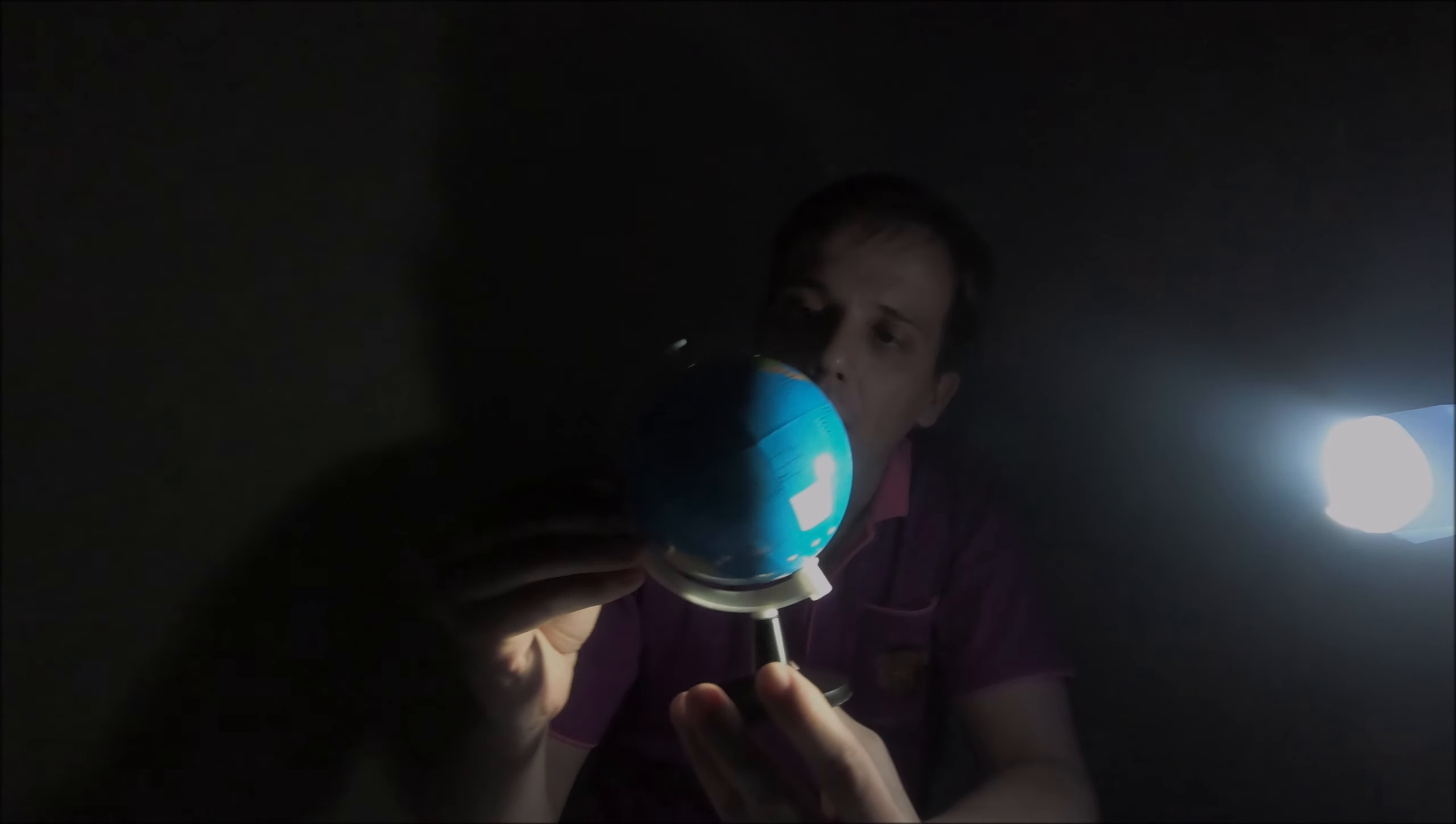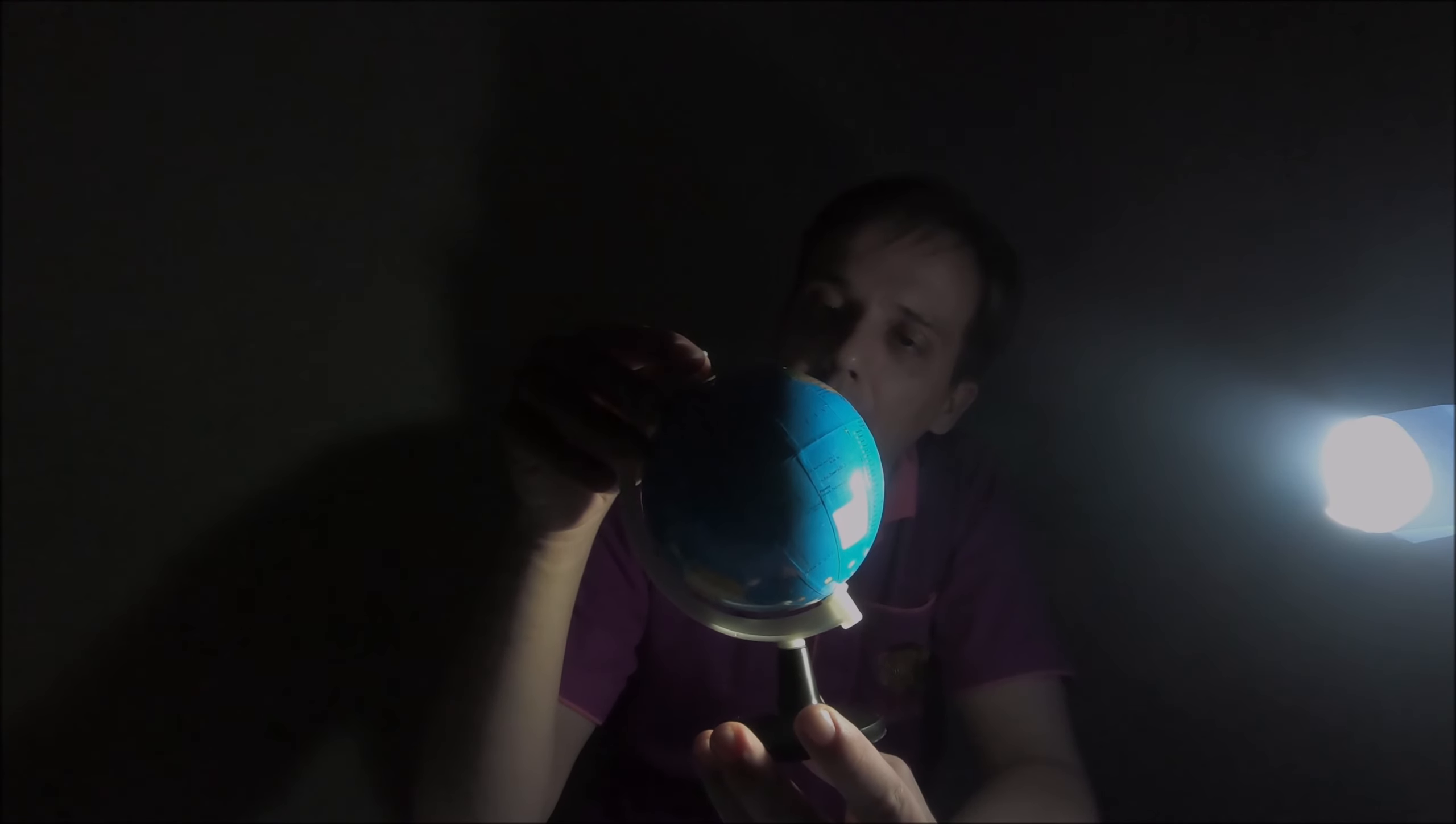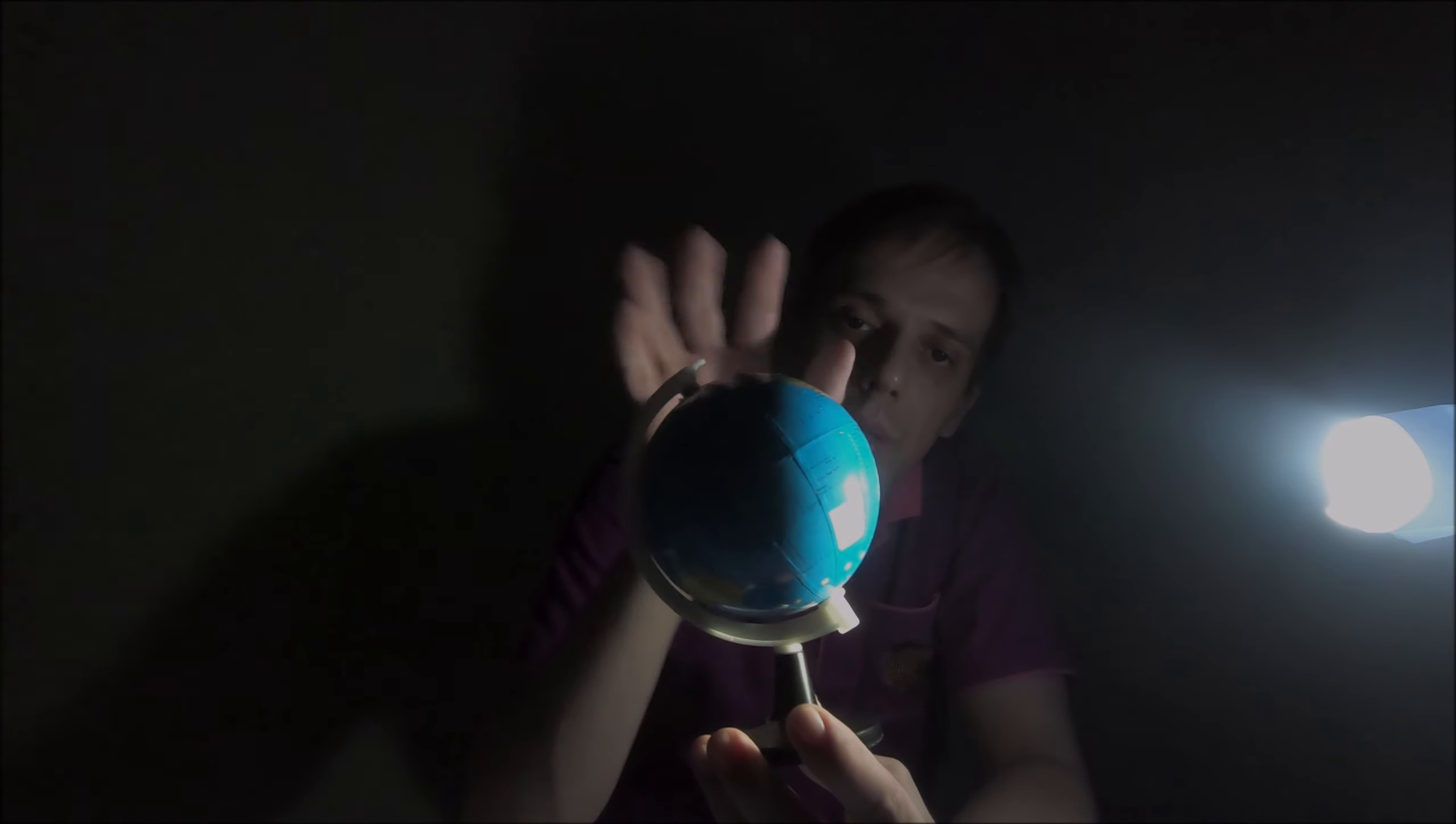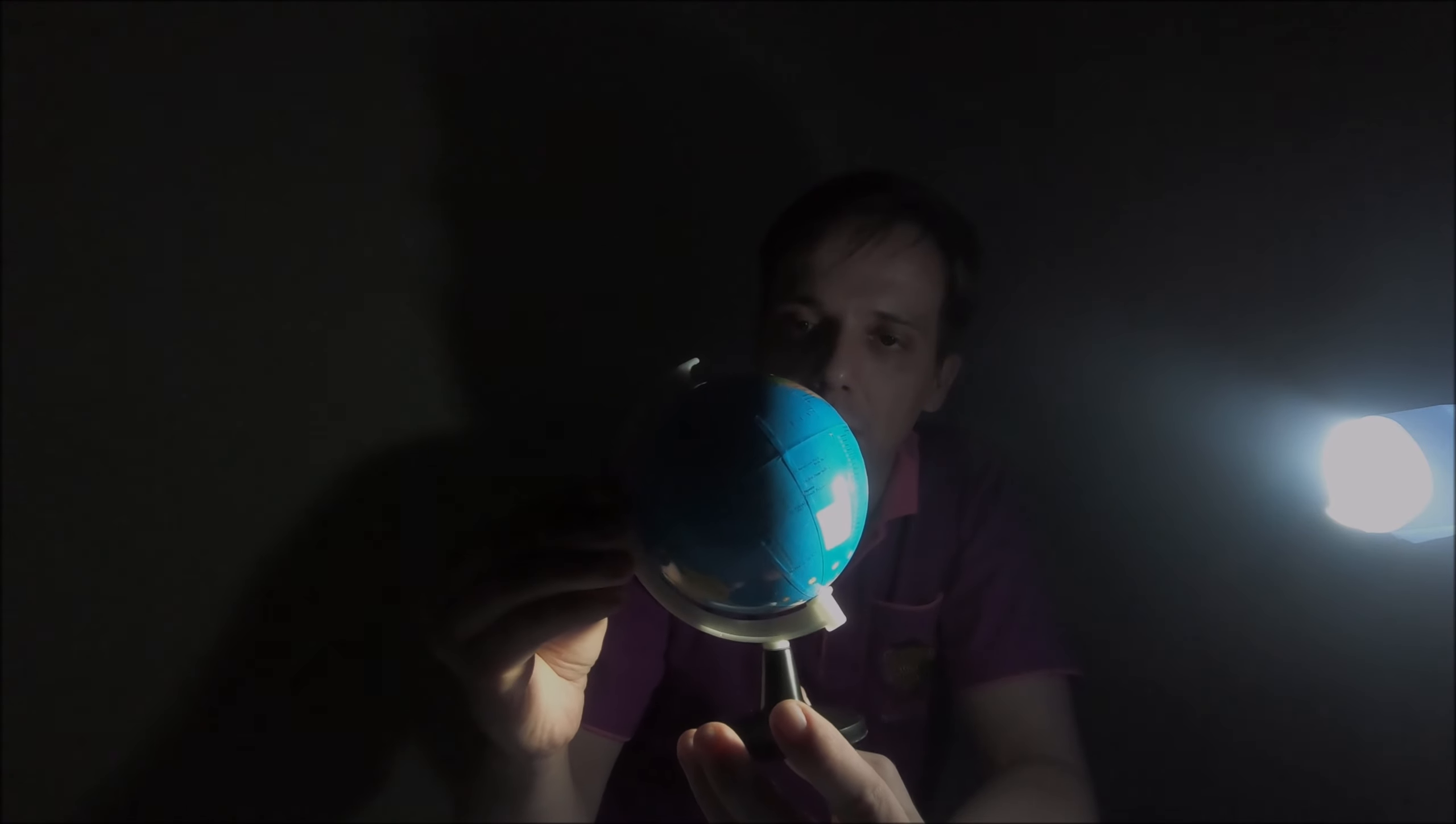And now let's bring back our Earth to the picture. As you can see, something interesting is already happening here. The side that is facing the Sun gets all the light, so it's very bright, while the other side gets no light from the Sun, so it's dark.